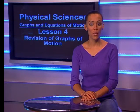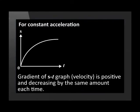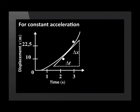Now let's revise the graphs of motion for constant acceleration. For constant acceleration, the displacement versus time graph is a curve. If velocity increases, the change in displacement gets larger as time goes on, and the gradient of the displacement-time graph gets steeper and steeper. If the velocity decreases, the displacement versus time graph is still a curve, but the gradient is getting less steep. In both cases, the gradient of the tangent at any point gives us the instantaneous velocity at that point.